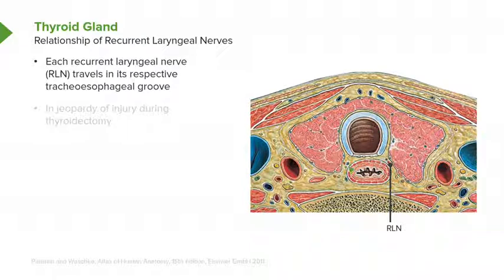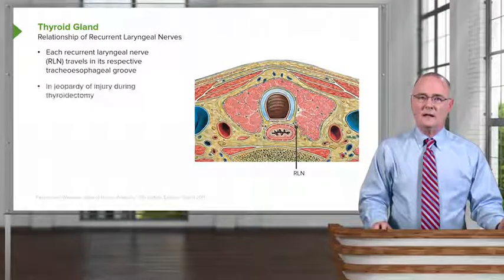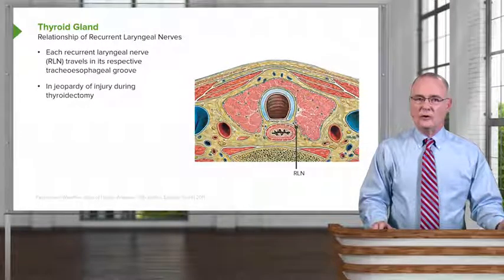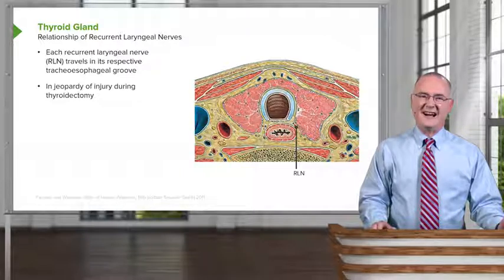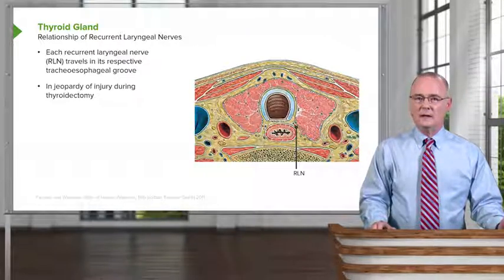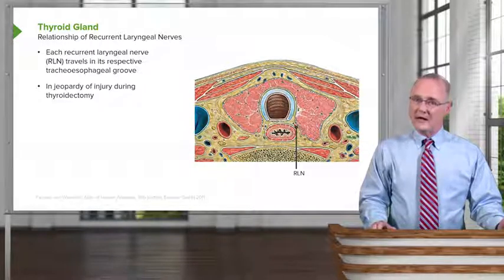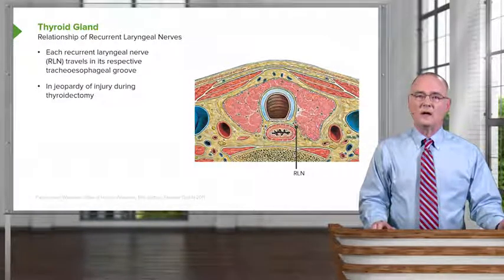Here is the left recurrent laryngeal nerve, and again it travels in the tracheoesophageal groove. Clinically, these are important during a thyroidectomy. The surgeon has to carefully identify these nerves and preserve them so they are not injured during the removal of the thyroid gland. We'll also demonstrate another clinical correlation of the recurrent laryngeal nerves when we talk about thyroid goiter.